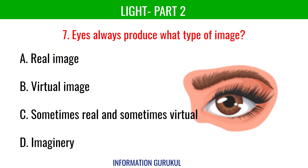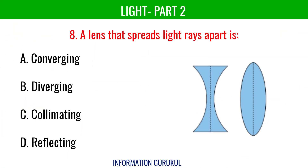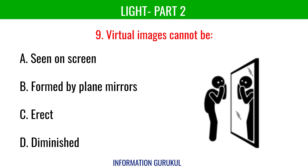Eyes always produce what type of image? Real image. A lens that spreads light rays apart is a diverging lens. Virtual images cannot be seen on a screen.